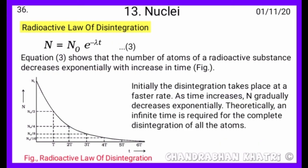Equation third shows that the number of atoms of a radioactive substance decreases exponentially with increase in time, as you can see in this figure. Initially, the disintegration takes place at a faster rate. As time increases, capital N gradually decreases exponentially. Theoretically, an infinite time is required for the complete disintegration of all the atoms.